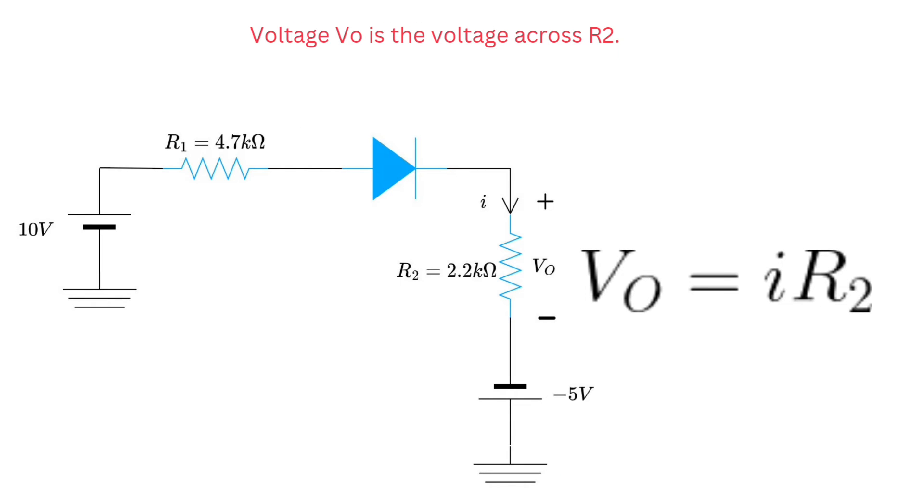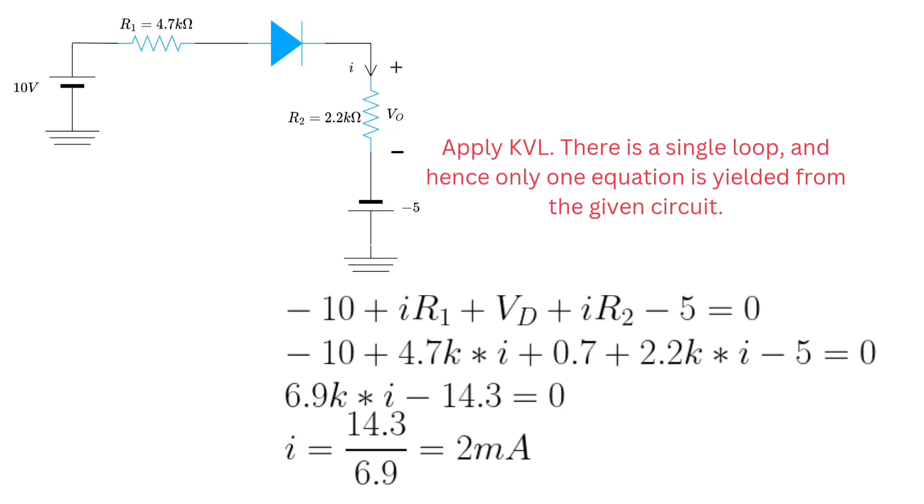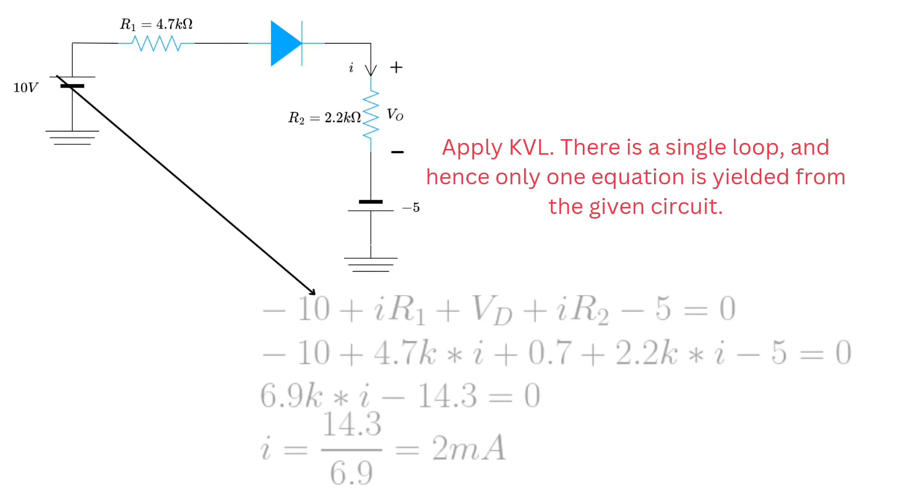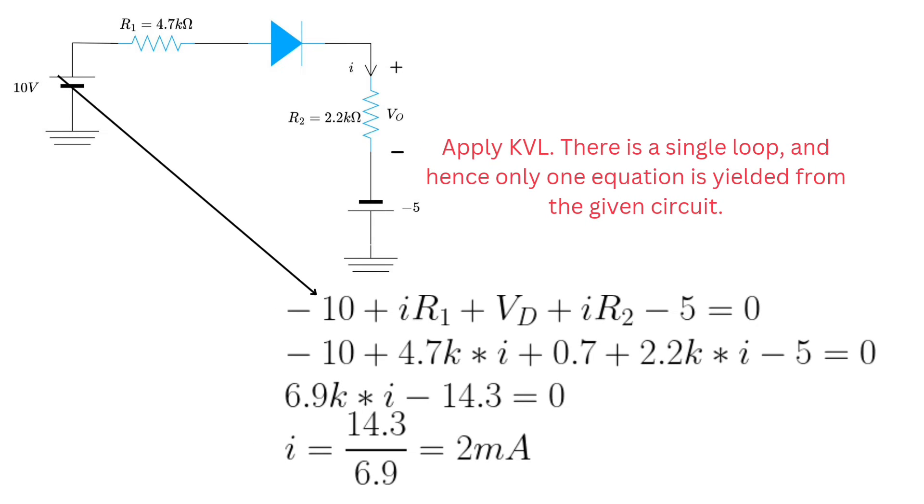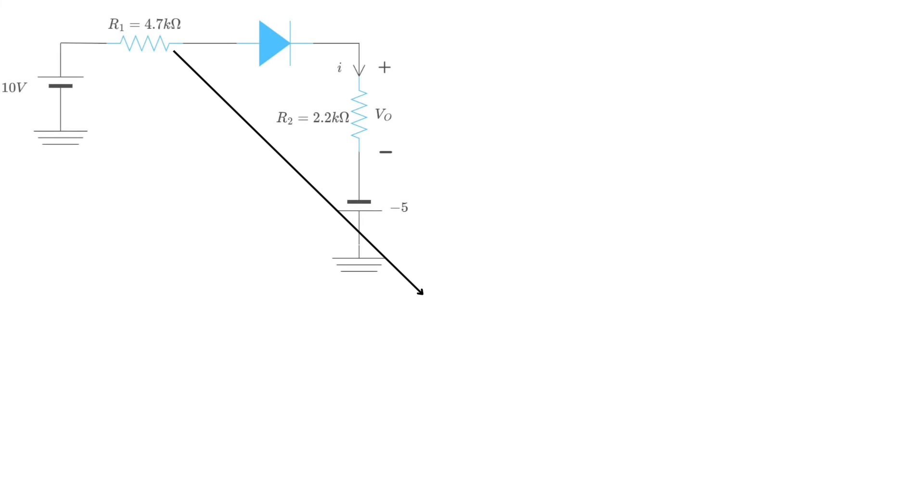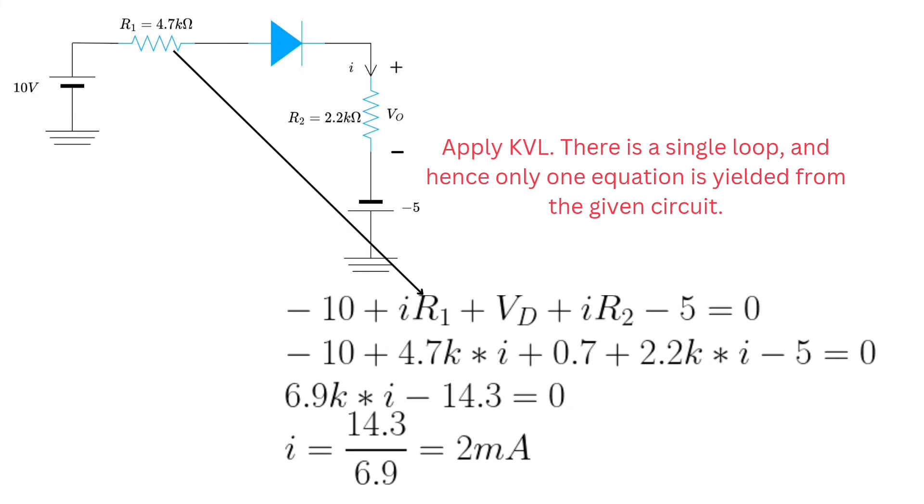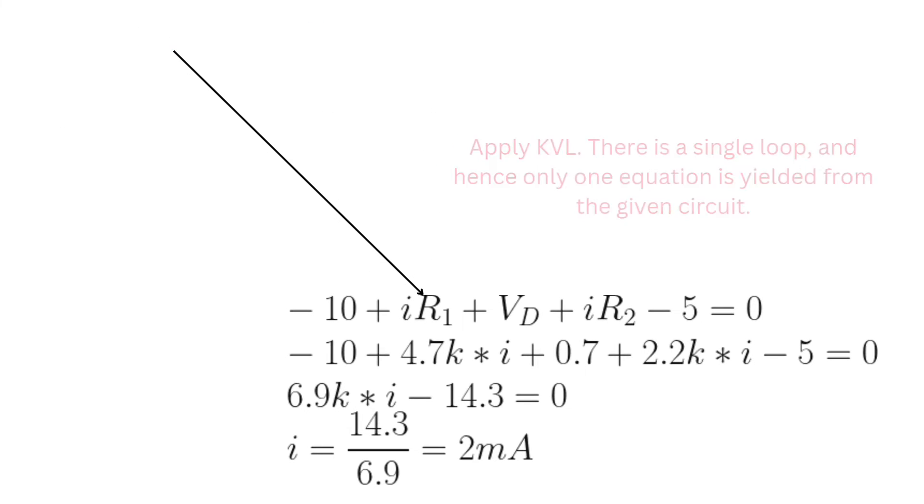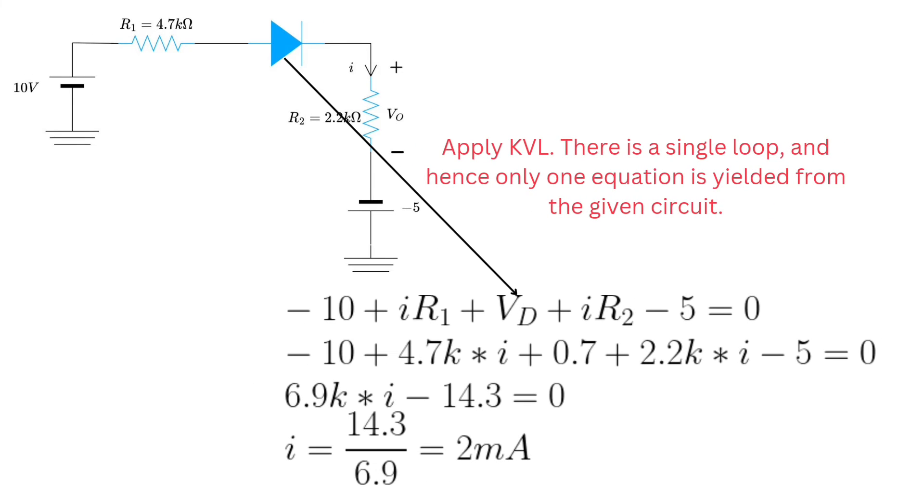We need to find out voltage across R2 and it is given as V0 is equal to I R2. Let's apply KVL. Here is a single loop so the only KVL equation will form. This is Vd.